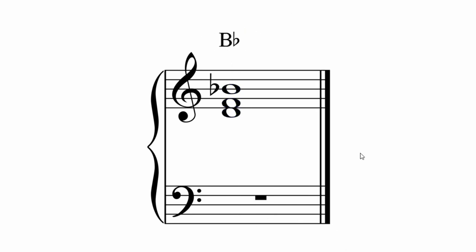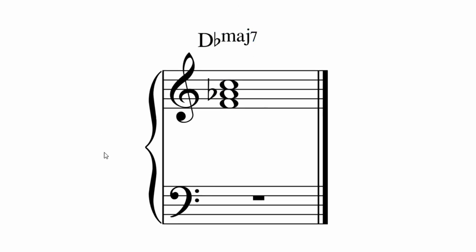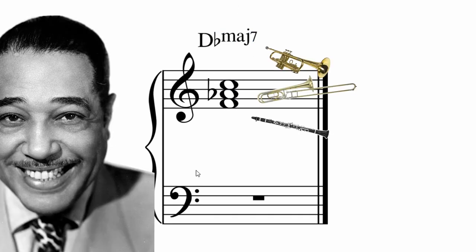This is a Duke Ellington voicing. It's a B-flat major triad in first inversion with the rhythm section on a B-flat. And in his famous ballad Solitude he has this voicing. It's a rootless D-flat major seven with the rhythm section on a D-flat major.